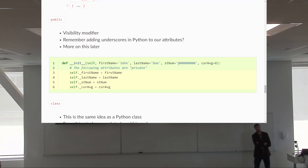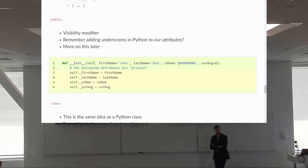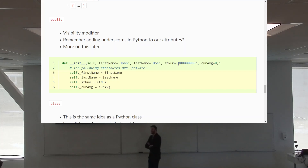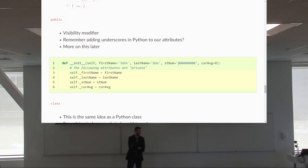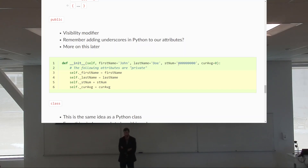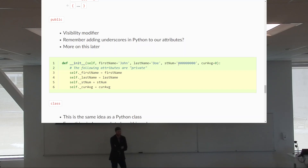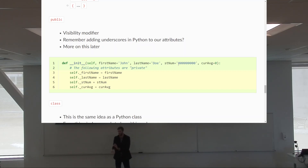In Java, you explicitly specify with keywords — public and private. If something is private, it's not just a convention you're not supposed to follow; you actually can't access it. Java won't let you. If you try, the program won't even run. This will make more sense once we start doing it in practice.